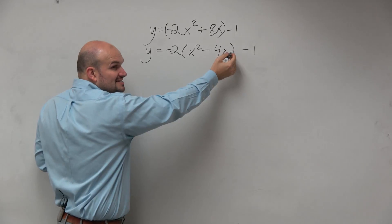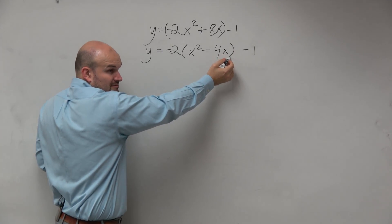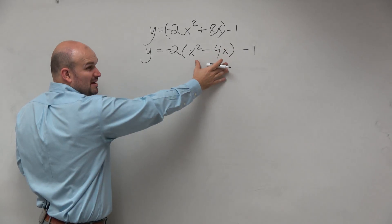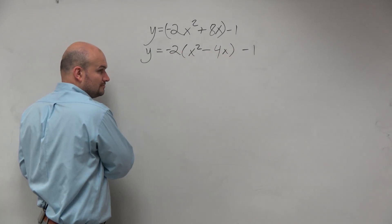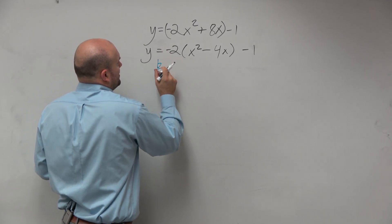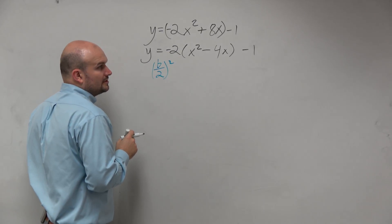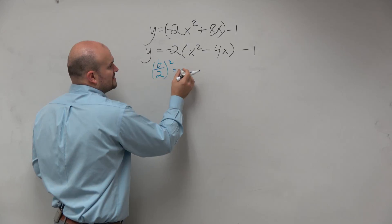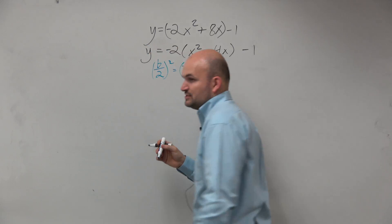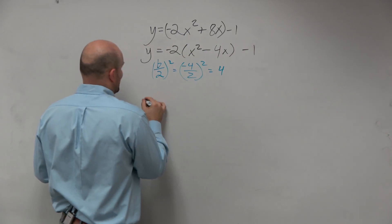But I don't have a constant that completes my square, right? You guys agree with me? I need something that completes my square or creates my perfect square trinomial. So what I'm going to do is I'm going to take my b divided by 2 squared. And therefore, in this case, it's negative 4 divided by 2 squared. Negative 4 divided by 2 is negative 2. Negative 2 squared is equal to 4. Add that.